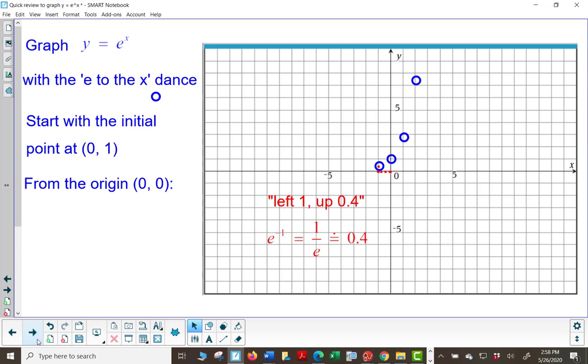In the second quadrant, we'll go left 1, up 0.4. The reciprocal of e is about 0.4. Then left 2, up about 0.14, because the reciprocal squared is about 0.14.